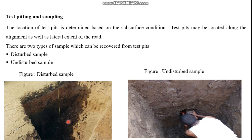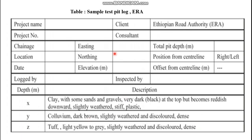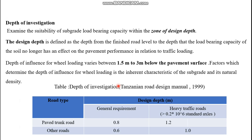Test pits have many advantages: you can recover both disturbed and undisturbed samples, observe the stratification of the soil, and determine the depth of groundwater if present. A typical test pit log table includes the project name, client, consultant, station where the test pit is excavated, location, and position — whether on the center line or offset from it — and the type of soil.